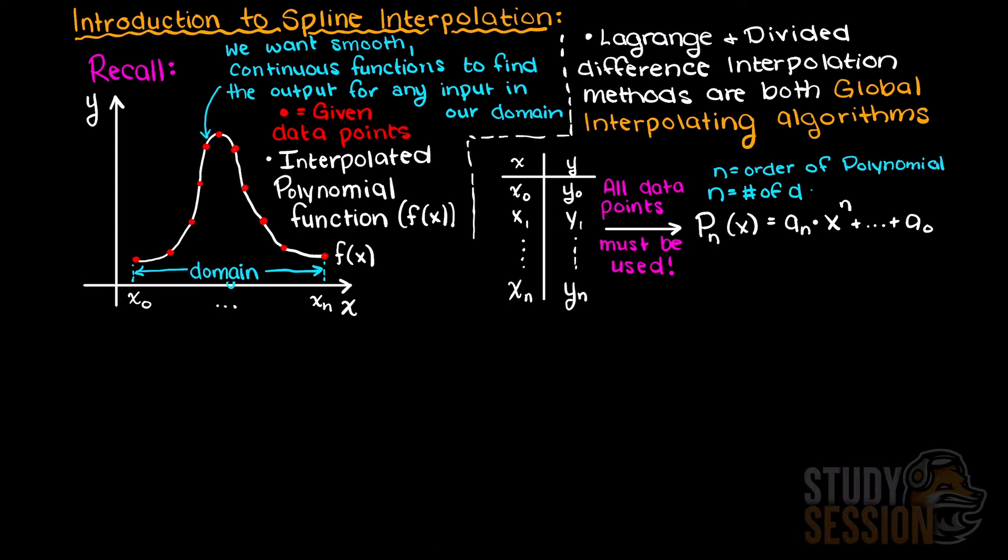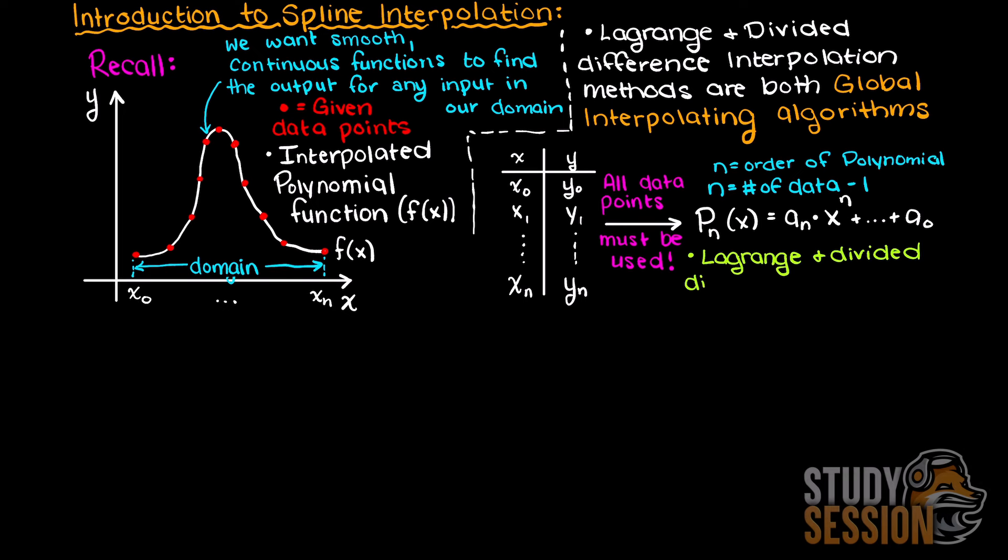Therefore, as I've previously mentioned, it doesn't matter if we use Lagrange interpolation or Newton's divided difference interpolation. Both methods will result in the same global interpolating polynomial as they take in and output the same result.